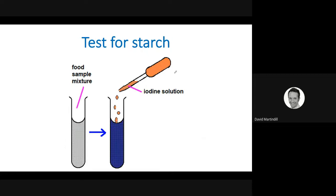Test for starch is a little easier. Here, you just add iodine solution, which is red-brown. And as you can see, if starch is present, it goes blue slash black. Blue slash black.